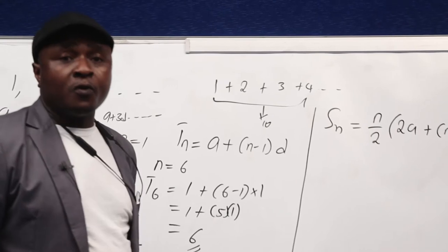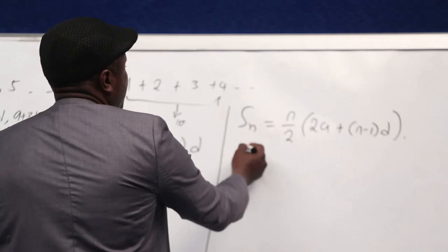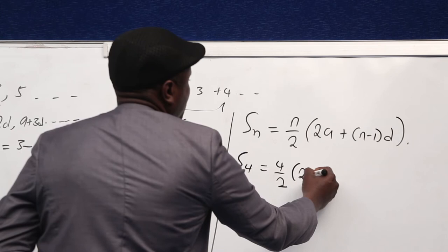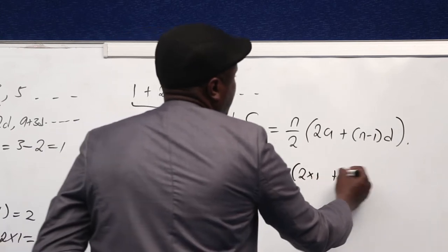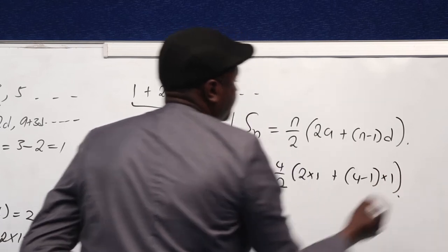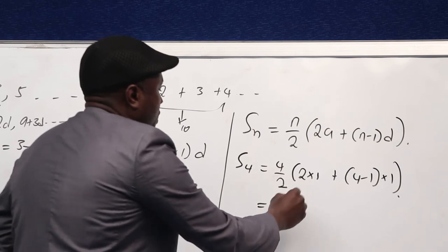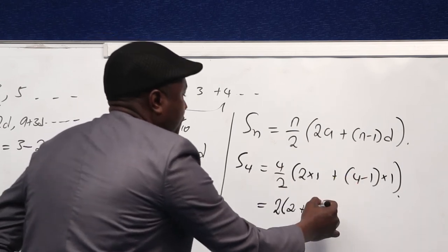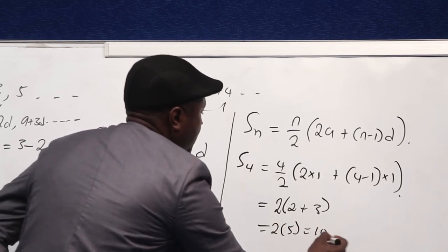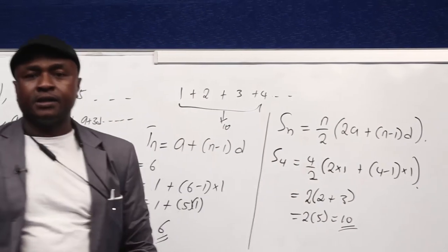To get the sum of the first four terms, as in this illustration, we use: S4 = 4/2 × (2 × 1 + (4 − 1) × 1) = 2 × (2 + 3) = 2 × 5 = 10. Of course, using the formula, we arrive at 10.